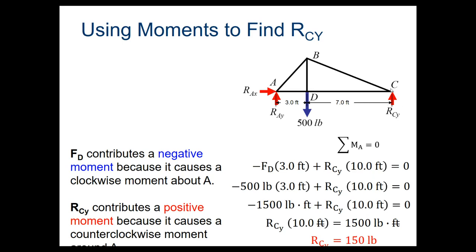The RAY force is drawn upward because it's supporting the load. At C we have RCY, just one single force. Point A is our pin joint, giving two reaction force components, while C is the roller joint with only one. Pretty much all truss bridges have this setup — a pin joint at one end and a roller at the other — to allow for thermal expansion and contraction as the metal heats and cools.